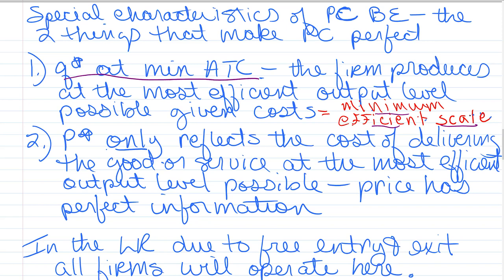So these two things — that in the long run all firms produce at minimum efficient scale and the most efficient output level possible, and that price only reflects the real cost of delivering that good or service — are what make perfect competition perfect. This is why we study it. While there's nothing that approximates perfect competition in the real world, because even eggs are white and brown and free range, it gives us a way to assess what's not present in other industries.